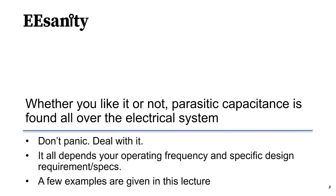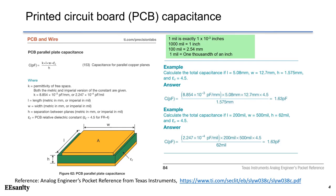Whether you like it or not, parasitic capacitance can be found everywhere in electrical systems. As a design engineer, you must know how to deal with it. It all depends on your operating frequency and specific design requirements and specs. In this lecture, I will show a few examples about parasitic capacitance. First, let's talk about the printed circuit board, or PCB capacitance.